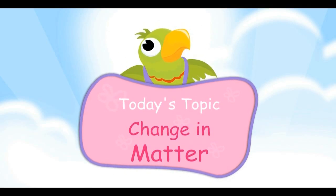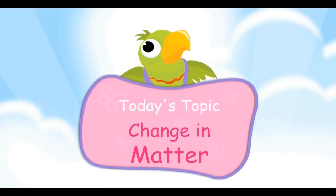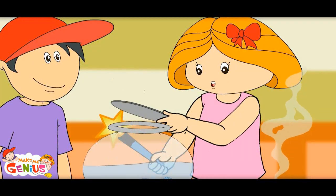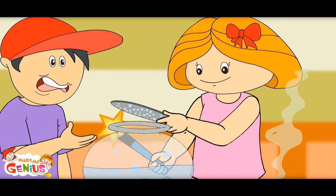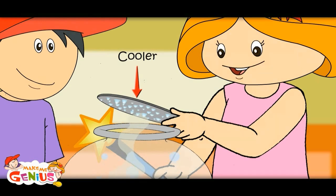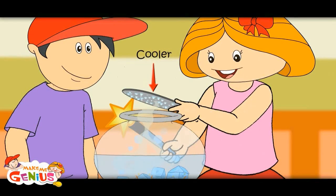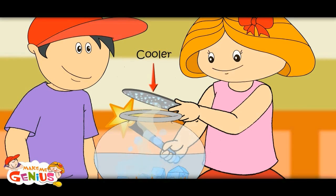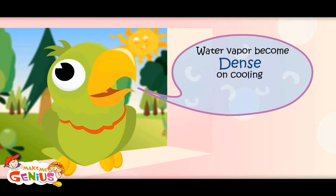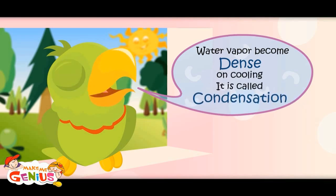Today's topic is changing matter. Let me show you something — vapors are again becoming liquid, because the temperature of the cover is cooler than the temperature inside the pot. So molecules again start coming close to each other. This is how rain happens. When water vapors touch a cool surface, they become dense and come close to each other. It is called condensation.